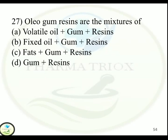Question 27: Oleo gum resins are mixtures of — Option A: Volatile oil plus gum plus resins. Option B: Fixed oil plus gum plus resins. Option C: Fats plus gum plus resins. Option D: Gum plus resins. Correct answer is Option A — volatile oil plus gum plus resins.